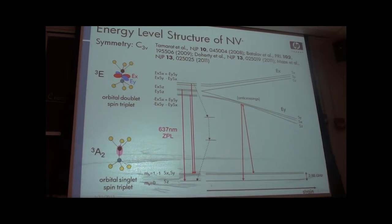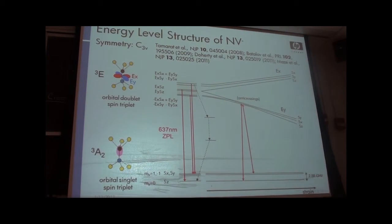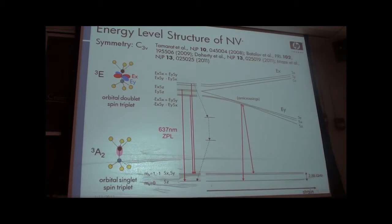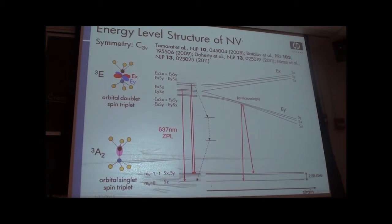Especially for room temperature experiments, another very important feature is that certain excited states, primarily states with MS equals plus or minus one spin character, have a relaxation pathway through a set of singlet states. As a result, if you excite an NV center off resonance with a green laser or LED, you can spin polarize it 90% or better into the MS equals zero spin state. This is what allows room temperature experiments to work. Also, fluorescence is brighter starting in MS equals zero, giving a way to read out the state.